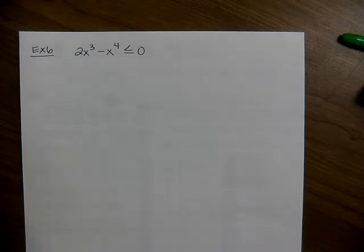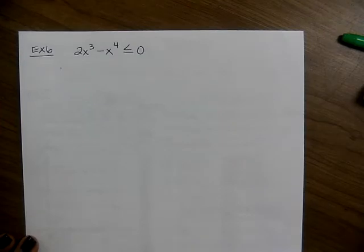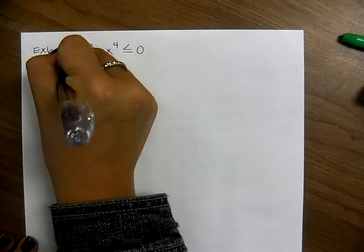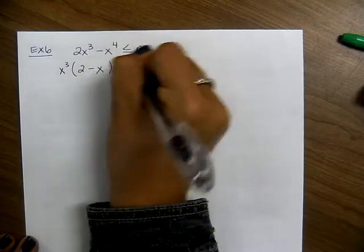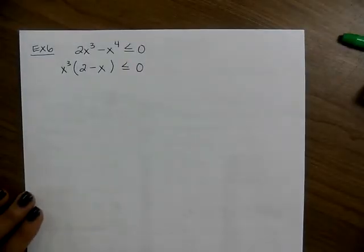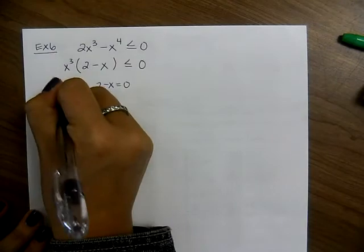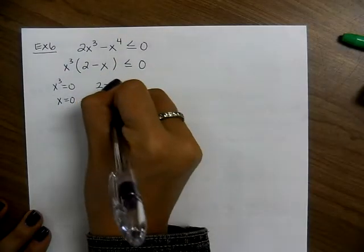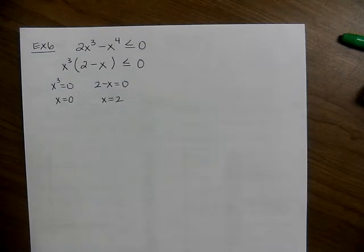First, everything on the left and zero on the right — yes, we're ready. Now simplify — it's already simplified. Factor it: there's a GCF. Take out a positive x cubed, leaving 2 minus x, so x cubed times 2 minus x is less than or equal to zero. Use the zero product property: x cubed equals 0 gives x equals 0, and 2 minus x equals 0 gives x equals 2. These are critical values, not solutions.